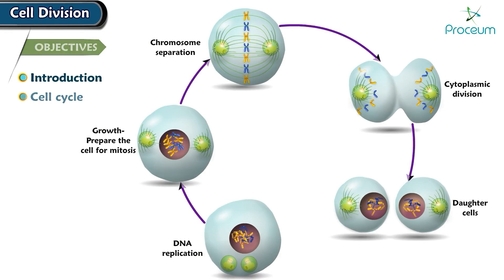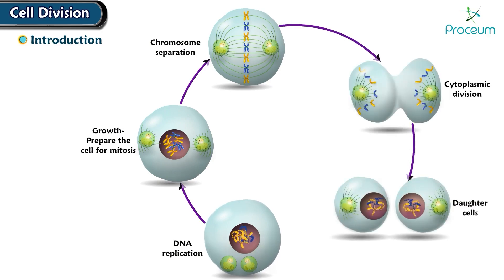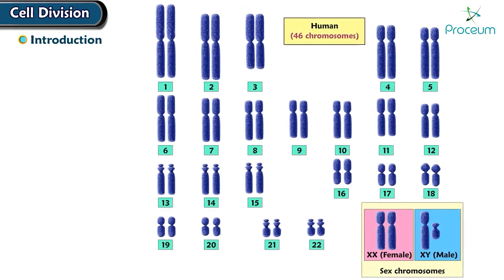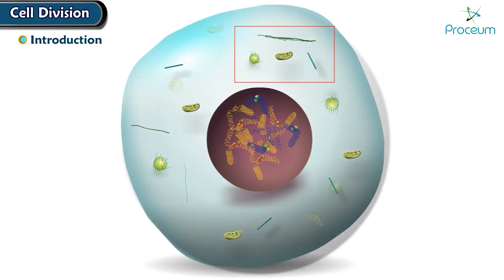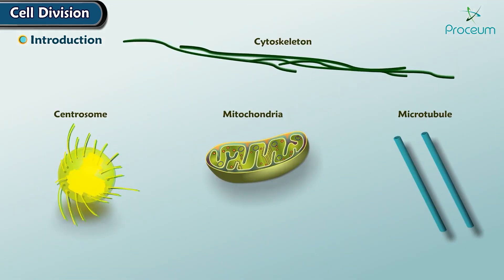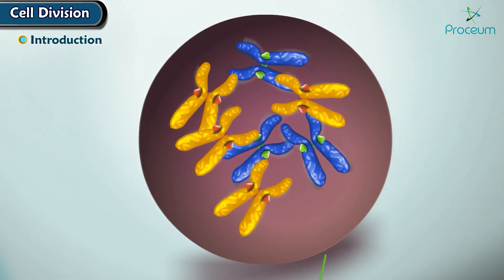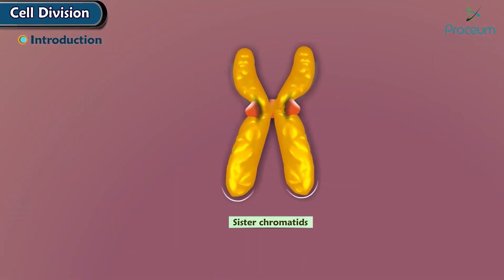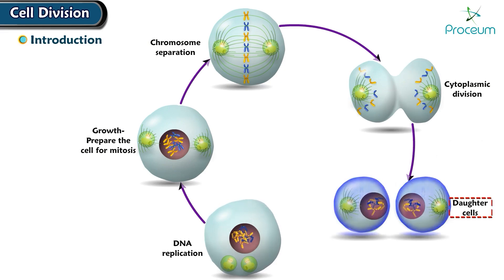Cell division — Introduction. Cell division is a process by which a parent cell divides into two or more daughter cells. A typical human cell contains 46 chromosomes: two copies of the 22 homologous chromosomes plus two copies of the sex chromosome. When the cell divides, it roughly doubles all of its contents including organelles and the cytoskeleton, and duplicates each chromosome into two sister chromatids. The cell then splits into two identical daughter cells, each with the same 46 chromosomes as the mother cell.